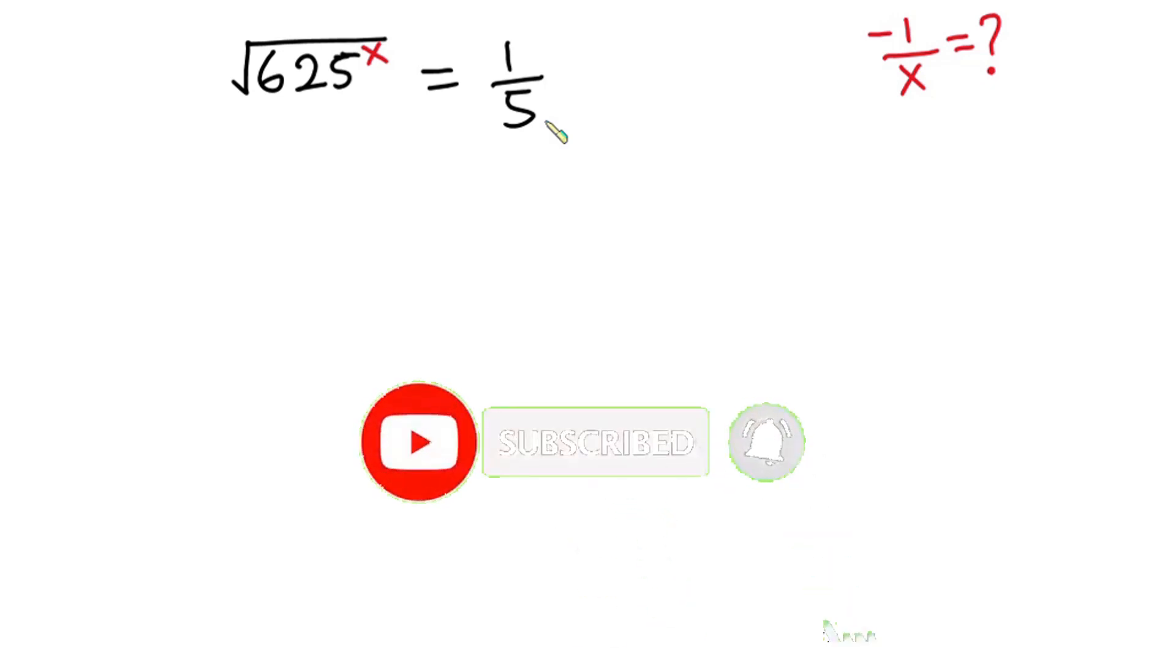Now let's get started. First I'm gonna raise each side of this equation to the second power so that this square will cancel the square root. Now we have 625 to the power x is equal to 1 squared is 1, then 5 squared is 25.